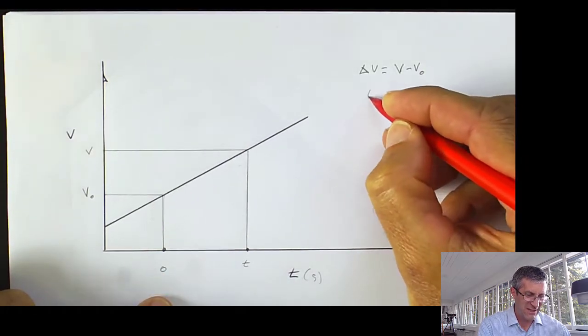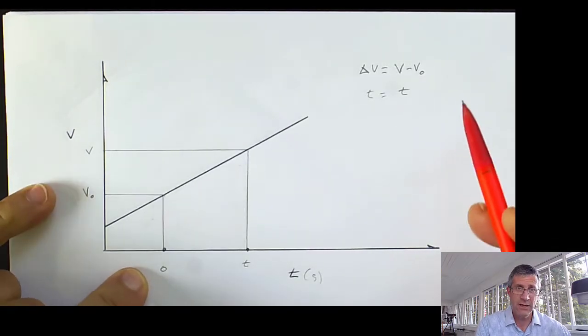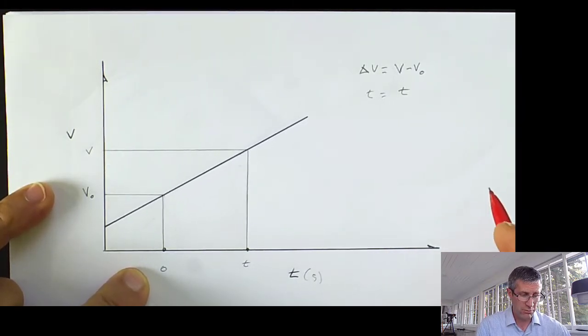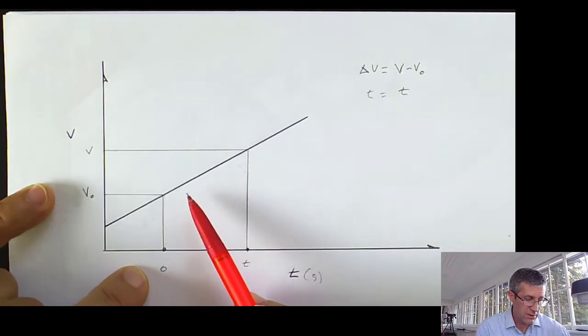So time is just going to be T. Technically, it's delta T, and it'd be subtracting my initial from my final, but we're going to pretty much always assume that the initial time point's zero.